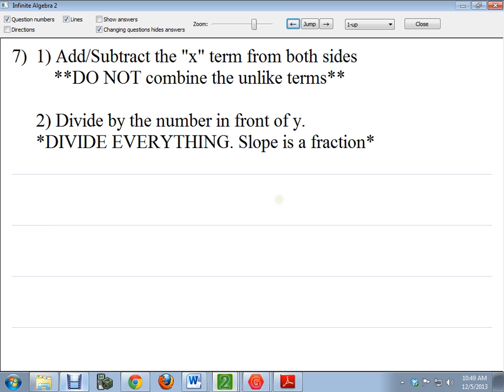Now, these are the steps for getting something into slope-intercept form. The first thing we want to do is add or subtract the x term itself, and make sure not to combine it on the other side. For instance, a 3x cannot be combined with a 2, so you can't put those guys together. And that is a big mistake that I see a lot of people still doing, so don't combine those unlike terms.